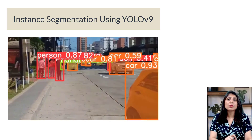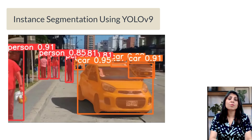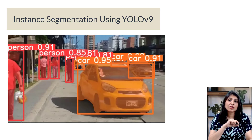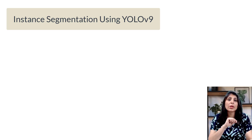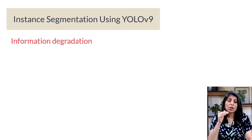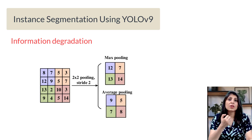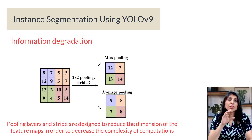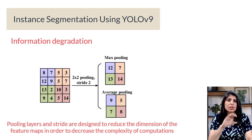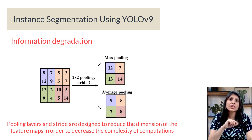Today we will focus on how we can perform instance segmentation using YOLOv9. Lightweight instance segmentation models like YOLOv5, YOLOv7, or YOLOv8 face a challenge known as information degradation during the forward pass. This degradation occurs because these models use downsampling operations in their architecture, such as pooling layers or strided convolutions, which reduce the spatial dimensions of the input image to create a compact feature representation.